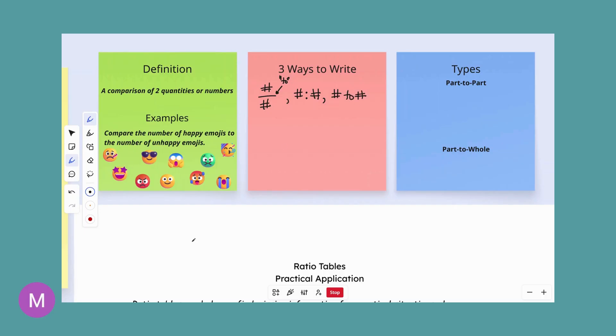Let's take a look at our first example here. It says compare the number of happy emojis to the number of unhappy emojis. Now in this, order matters. So if they list happy emojis first, we need to list happy emojis first in all of our comparisons, to unhappy emojis that would be listed second. So we're needing to put the unhappy emojis second in each of our ratios.